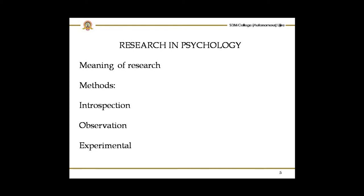In order to conduct any experiment, the experimenter must concentrate not only on independent and dependent variables but also on extraneous variables. Extraneous variables are those variables which may intrude in between the conduction of the experiment. For example, scolding a child causes emotional tension — scolding is the independent variable and emotional tension is the dependent variable.